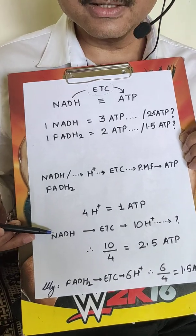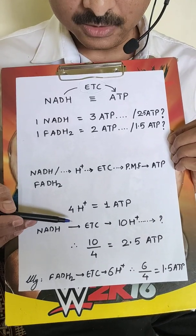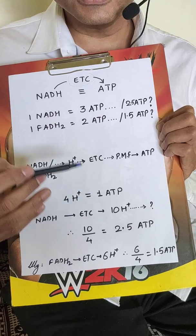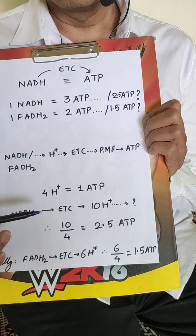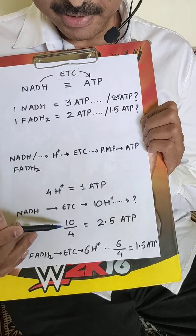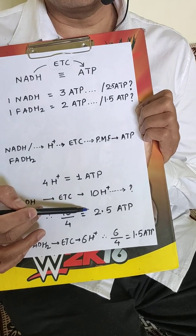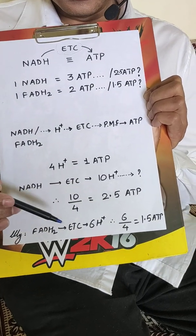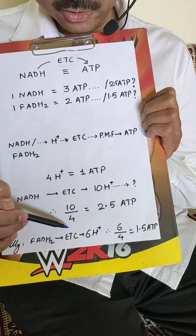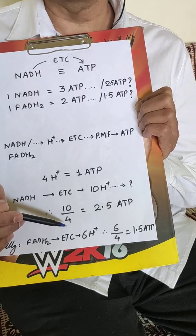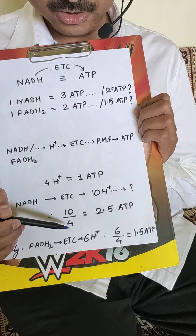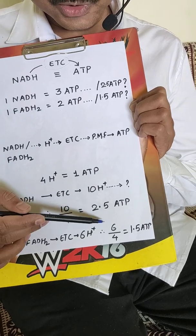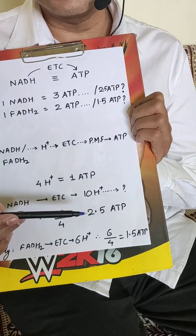When NADH donates its electrons and H+ ions through the electron transport chain, 10 H+ ions are translocated. So 10 divided by 4 comes to 2.5 ATPs. Similarly, when FADH2 passes through the electron transport chain, 6 H+ ions are translocated. So 6 upon 4 gives 1.5 ATPs.